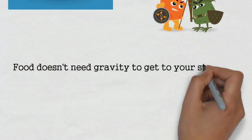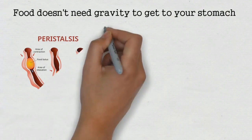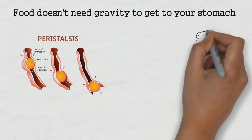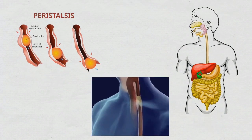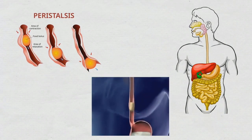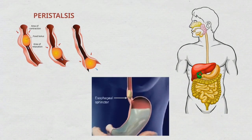Food doesn't need gravity to get to your stomach. The muscles in your esophagus constrict and relax in a wave-like manner called peristalsis, pushing the food down through the small canal and into the stomach. Ever wonder why it smells bad when you pass gas?